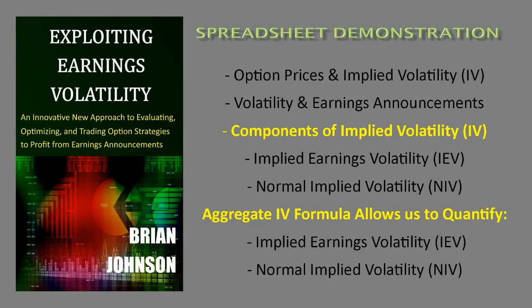This video will use the same aggregate implied volatility formula to solve for the current level of implied volatility that is embedded in option prices, and it will forecast how implied volatility will change approaching the earnings announcement itself. It will do so for a range of at-the-money options with different expiration dates. Once we know how the implied volatilities will change approaching the earnings date, we can determine how option prices will change as well, which will allow us to understand the impact on our option earnings strategies.